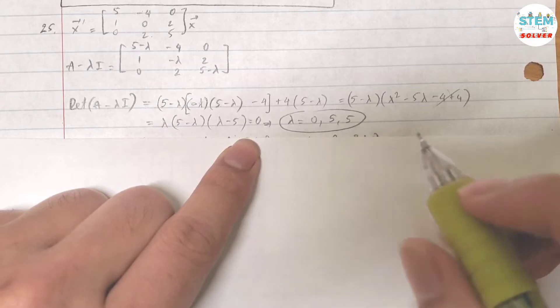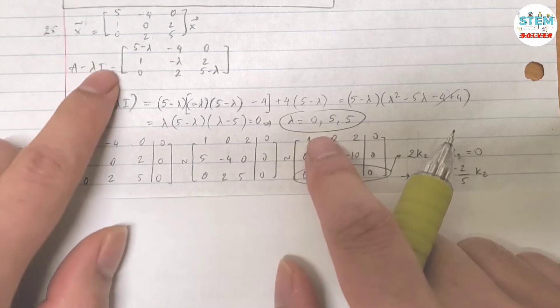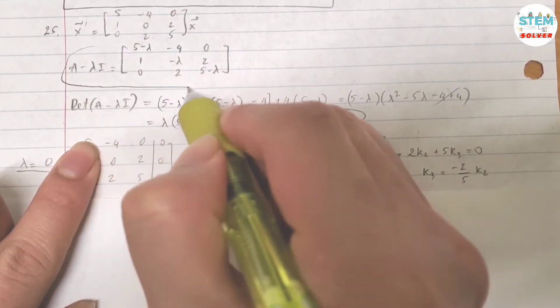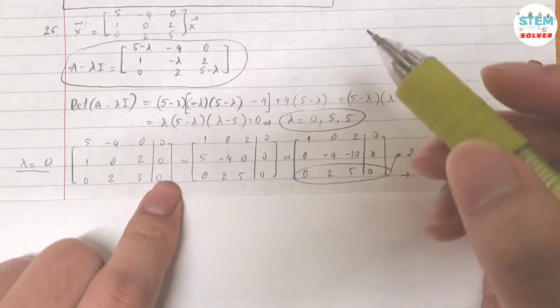And distinguish size and values as 2. So for lambda equals 0, plug it into this one. That gives you this matrix, augmented with 0.